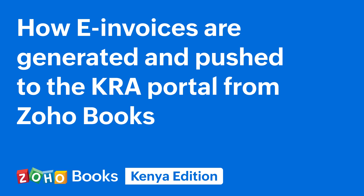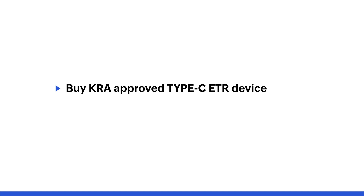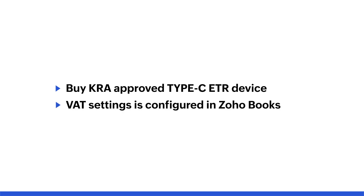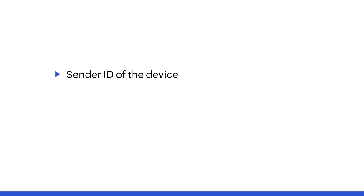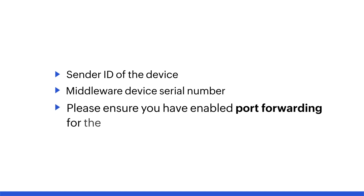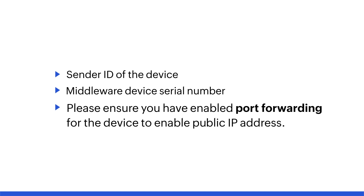For integration or to use the feature of e-invoicing in Zoho Books, one must buy a KRA approved Type-C ETR device and also need to ensure that VAT settings is configured in Zoho Books. Once you purchase the Type-C ETR device, please ensure you have the following details: Sender ID of the device, middleware device serial number, and also please ensure you have enabled port forwarding for the device to get the public IP address. Once all these details are ready with you, you are good to go to enable the e-invoicing feature in Zoho Books.